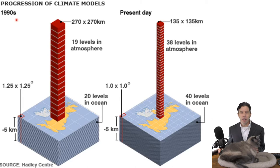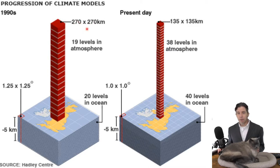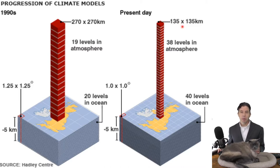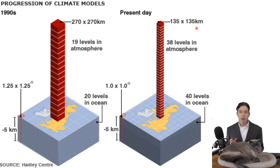Here's an example: a 1990s climate model had each cube at 270 by 270 kilometers — that's a pretty big box, the best they could do with computers at the time. When this slide was made it said 'present day' was 135 by 135 kilometers, but today we have climate models that can do 30 by 30 kilometer boxes. With today's fastest supercomputers we can simulate the atmosphere pretty well — the boxes are small enough and the math is tight enough that we do pretty good simulations.